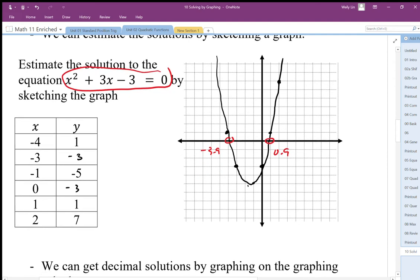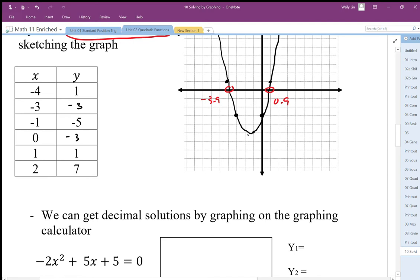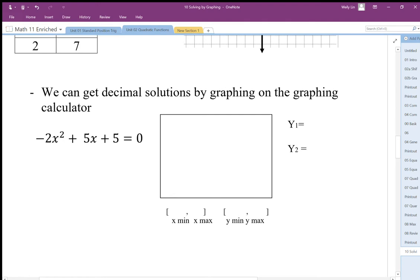If we want to get our solution, the more accurate value, we put it into our graphing tools and we solve by graphing. When we plug this in, we can solve this equation: negative 2x squared plus 5x plus 5. If we graph this, use your Desmos graphing tool: negative 2x squared plus 5x plus 5.